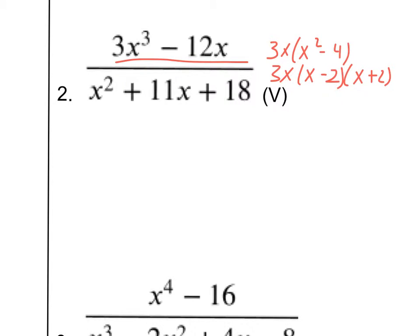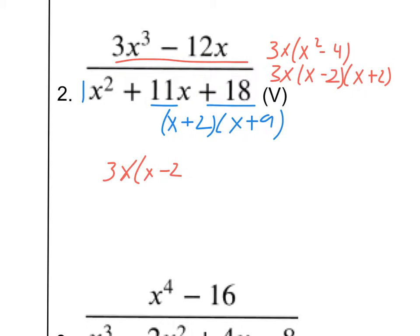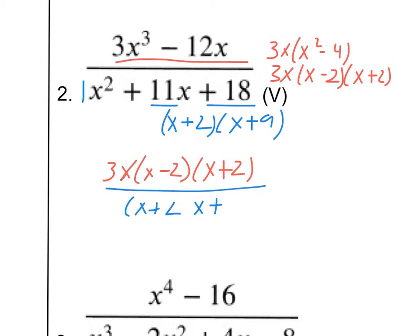For the bottom, I'm looking for things that multiply to 18 and add up to 11 since we have a 1 in front here. That's going to be X plus 2 and X plus 9 — these 9 and 2 multiply to 18 and add up to 11. Let's rewrite this. We got 3X and then X minus 2 and X plus 2 on top. On the bottom, we have X plus 2 and X plus 9.